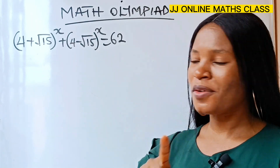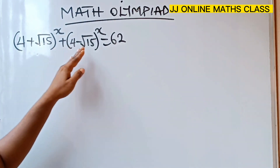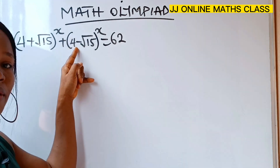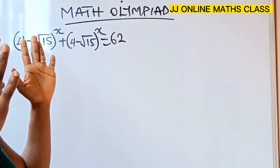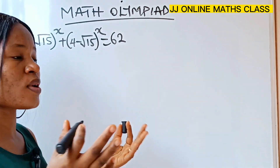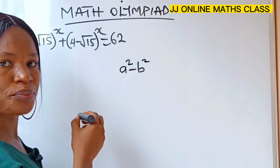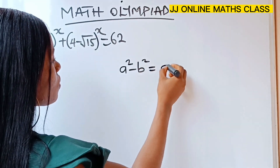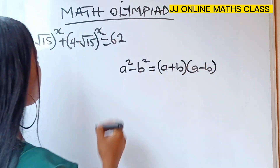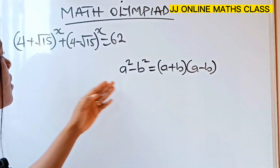We are going to start from there. What is difference of two squares talking about? Notice that the two expressions are the same except that one is plus and one is minus. Difference of two squares states that a squared minus b squared is equal to a plus b into a minus b.